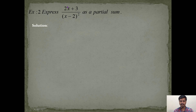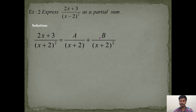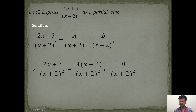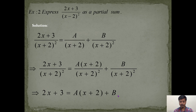We write this proper fraction as a partial sum: A/(x + 2) + B/(x + 2)². Can we apply the cover-up method here? No — because we don't have different factors in the denominator; the same factor (x + 2) is repeated twice. So we take the LCM instead. After cancelling the common denominator from both sides, we get: 2x + 3 = A(x + 2) + B.